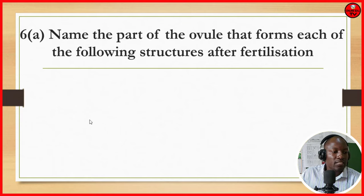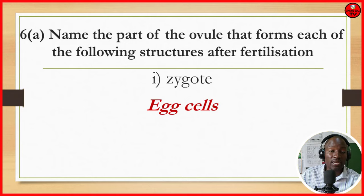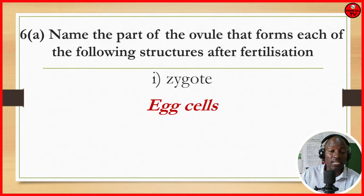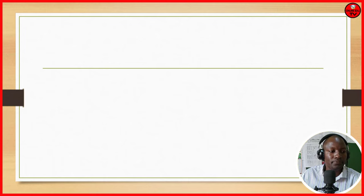Name the part of the ovule that forms each of the following structures after fertilization. Number 1, the zygote forms the egg cell. Then we have the testa, which forms the integument. This is what happens after fertilization.